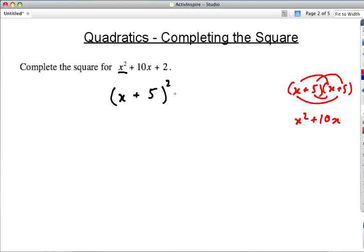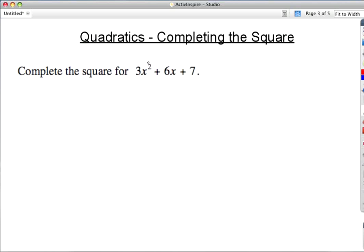What do we get we don't want? 5 times 5. So let's take that away. Plus 2 sitting on the end. And our answer: x plus 5 squared minus 23. There we go. Done.